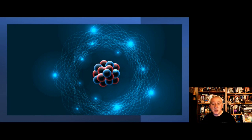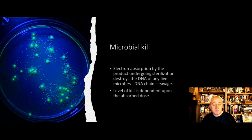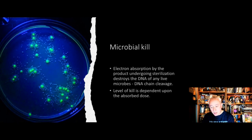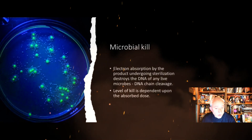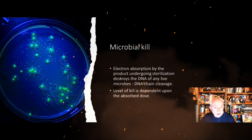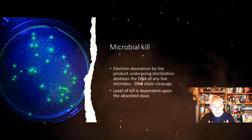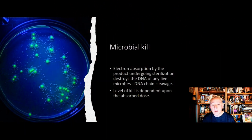This is sufficient to achieve microbial kill. Microbial kill happens as the electrons are absorbed by the product undergoing sterilization. When the electrons come into contact with microorganisms — bacteria and fungi — this is sufficient to destroy the DNA of any live microorganisms through a process called DNA chain cleavage.